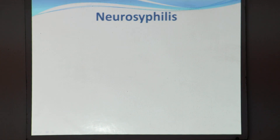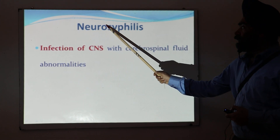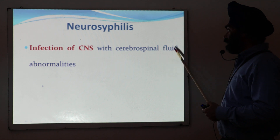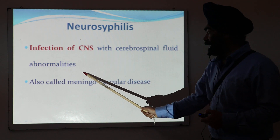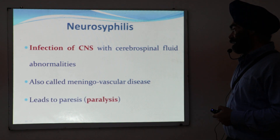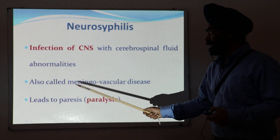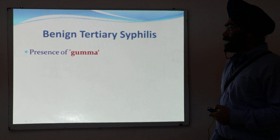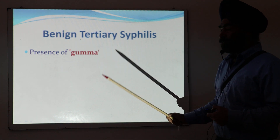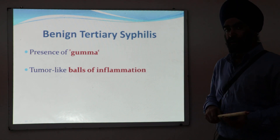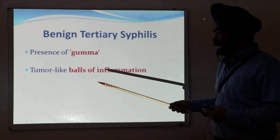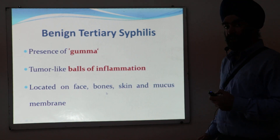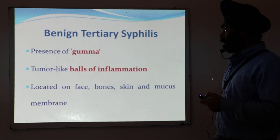The second manifestation of tertiary syphilis is neurosyphilis — infection of the CNS with biochemical abnormalities visible in the cerebrospinal fluid. There can be involvement of the meninges and blood vessels, also called meningovascular disease, and paralysis is one of the symptoms. The third manifestation is benign tertiary syphilis, characterized by the presence of gummas — small spherical, tumor-like inflammatory sites that can be present on the face, bone, skin, and mucous membrane.